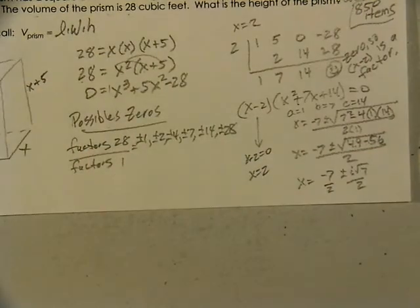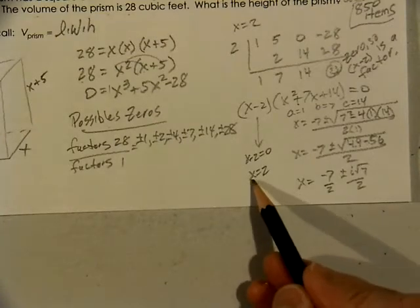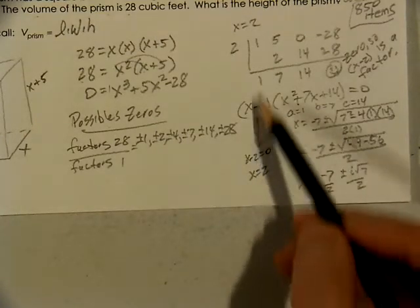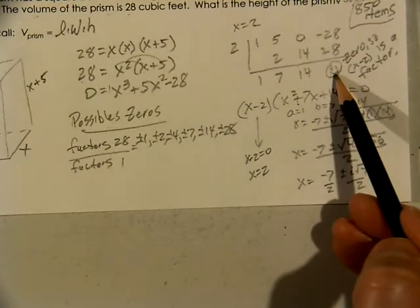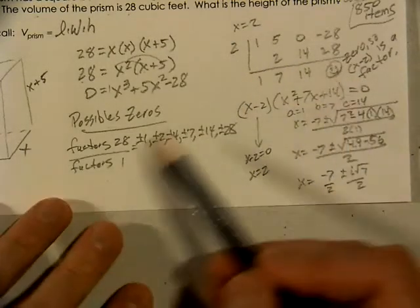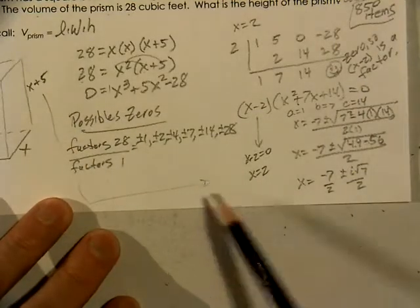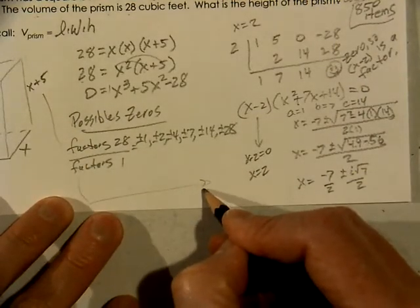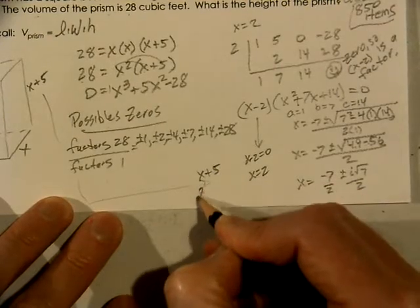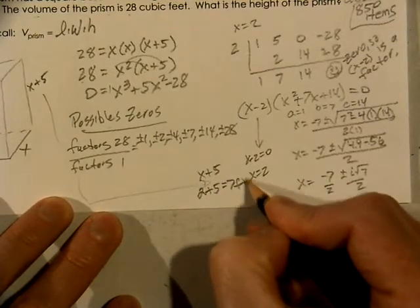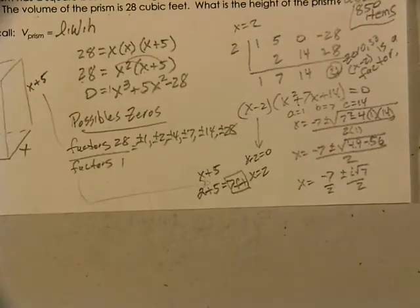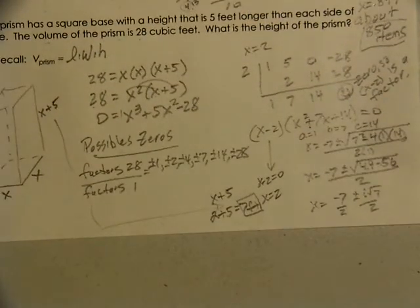The one that we really need is to know two. x is two made the problem work. We had that hint when we looked at the graph but we showed our work to verify that we got that by getting zero. Now we bring down the height which is x plus five. So we're going to say two plus five that gives us seven feet.